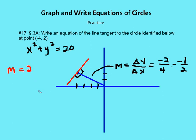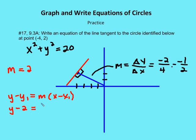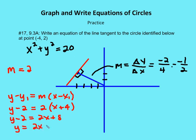Now I can use point-slope form to create my equation. Point-slope form is y minus y1 is equal to the slope times x minus x1. I have y minus 2 is equal to 2 times (x minus negative 4), which is x plus 4. Distributing the 2 gives y minus 2 is equal to 2x plus 8. Adding 2 to both sides, y is equal to 2x plus 10. That's the equation for the line tangent to the circle at point negative 4, 2.